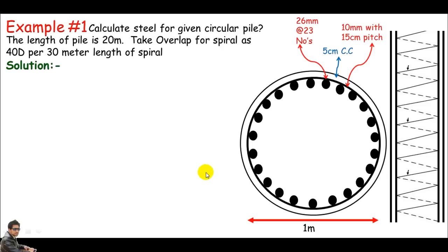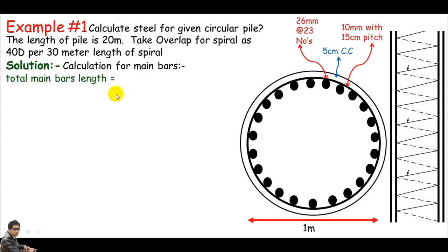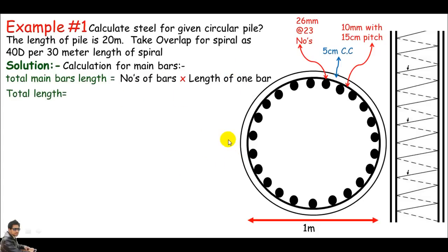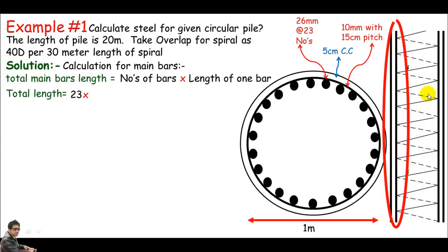I'll go straight into the solution. My approach will be main bars first, then spirals. For main bars, I just need the total length, which is: number of bars times the length of one bar. The total main bar length equals the number of bars — count these black dots, which represent the main bars — there are 23. So it's 23 times the length of one bar. The length, or height, is given as 20 meters.